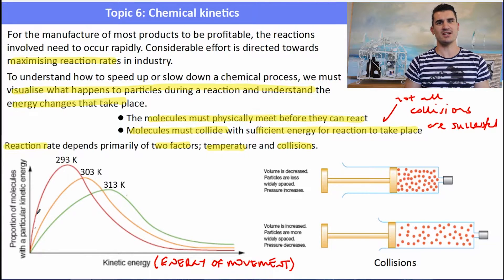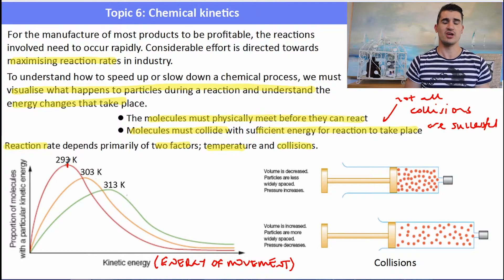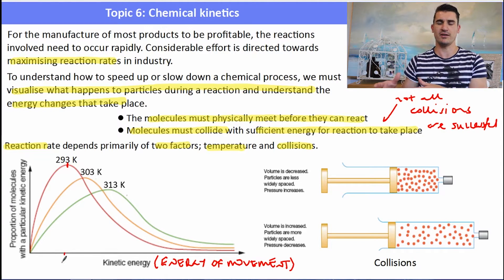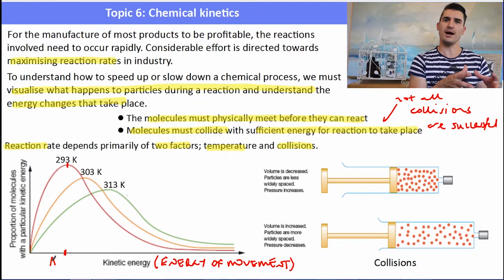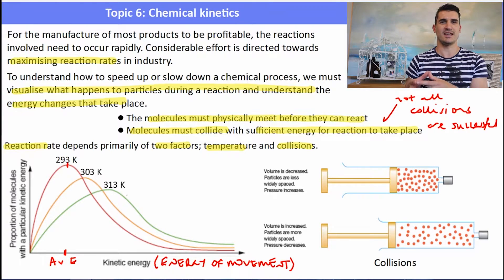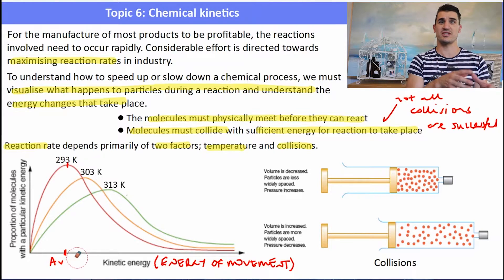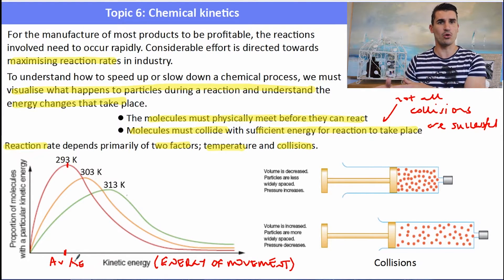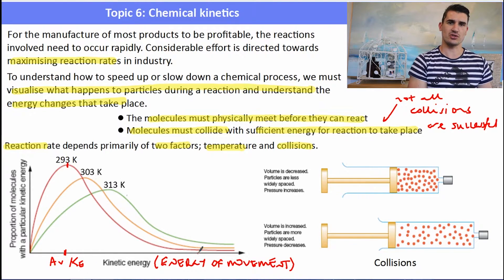If we start to increase the temperature of the same sample of particles, we start to shift that graph to the right. Now we have more particles with a greater amount of kinetic energy, proportional to the Kelvin temperature, because the Kelvin temperature has increased. We still have some particles moving very slowly and some moving super fast.